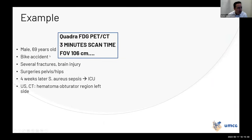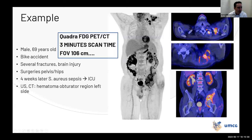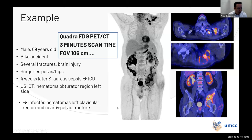Another case: a 69-year-old male with a bike accident, several fractures and brain injury, multiple surgeries. Four weeks later he was admitted to the ICU with sepsis. Ultrasound and CT revealed a hematoma on the right side. Because we wanted the upper legs fully in the field of view, we shifted the scan position — it's only 106 centimeters. The scan showed infected hematomas in the pelvic region and also in the left clavicular region.